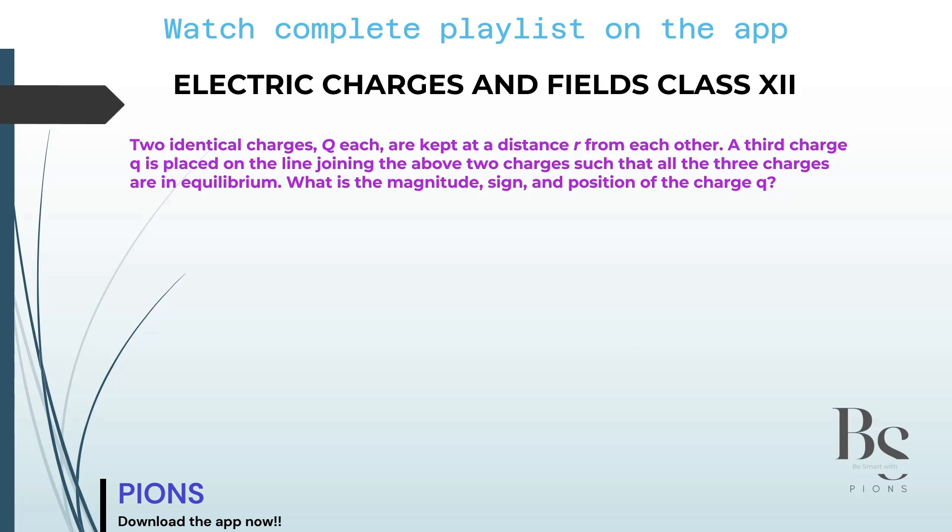Question number 3 says: Two identical charges, Q each, are kept at a distance R from each other. Let's take it as Q over here and another Q. Both are Q, separated by a distance of R.